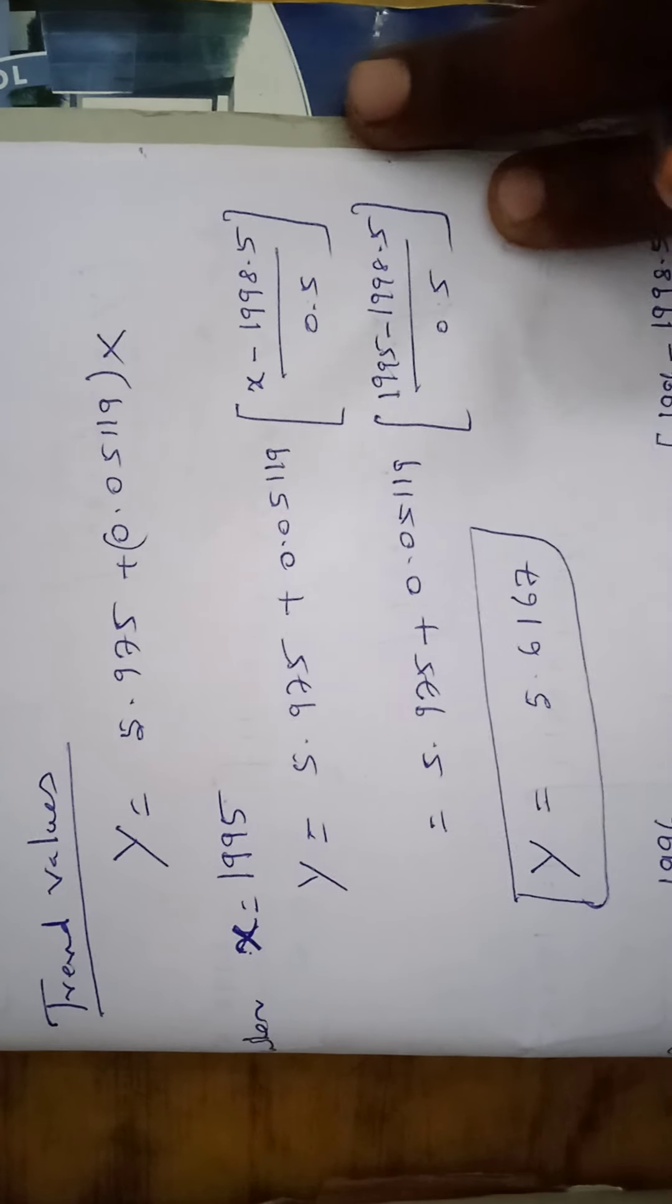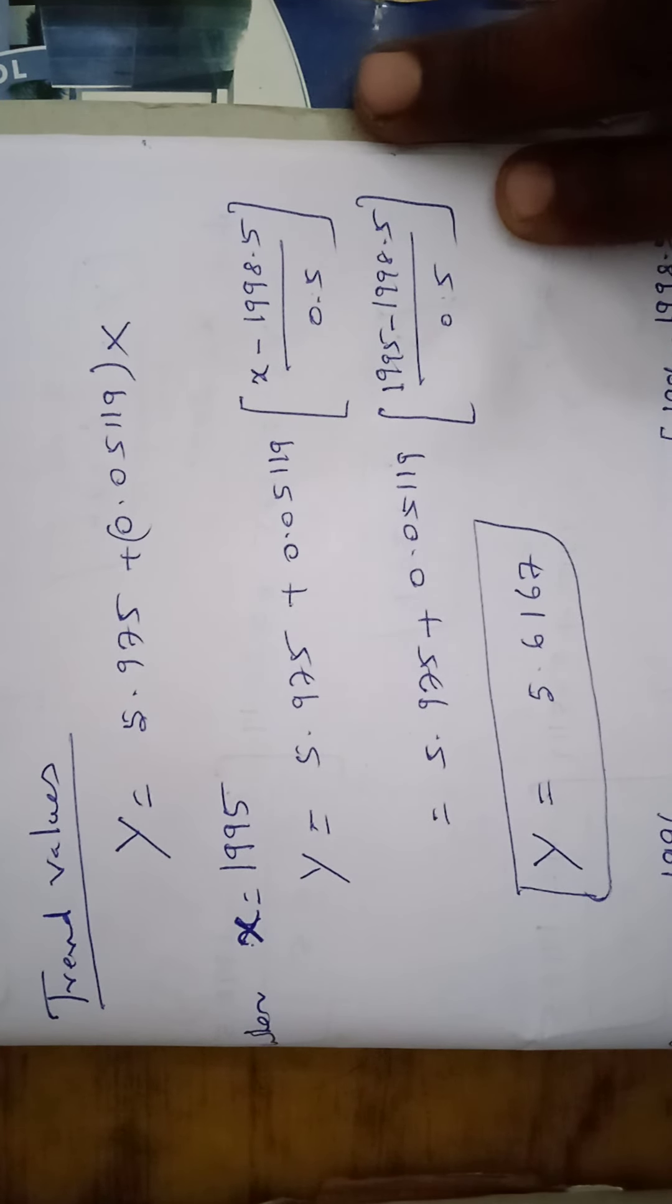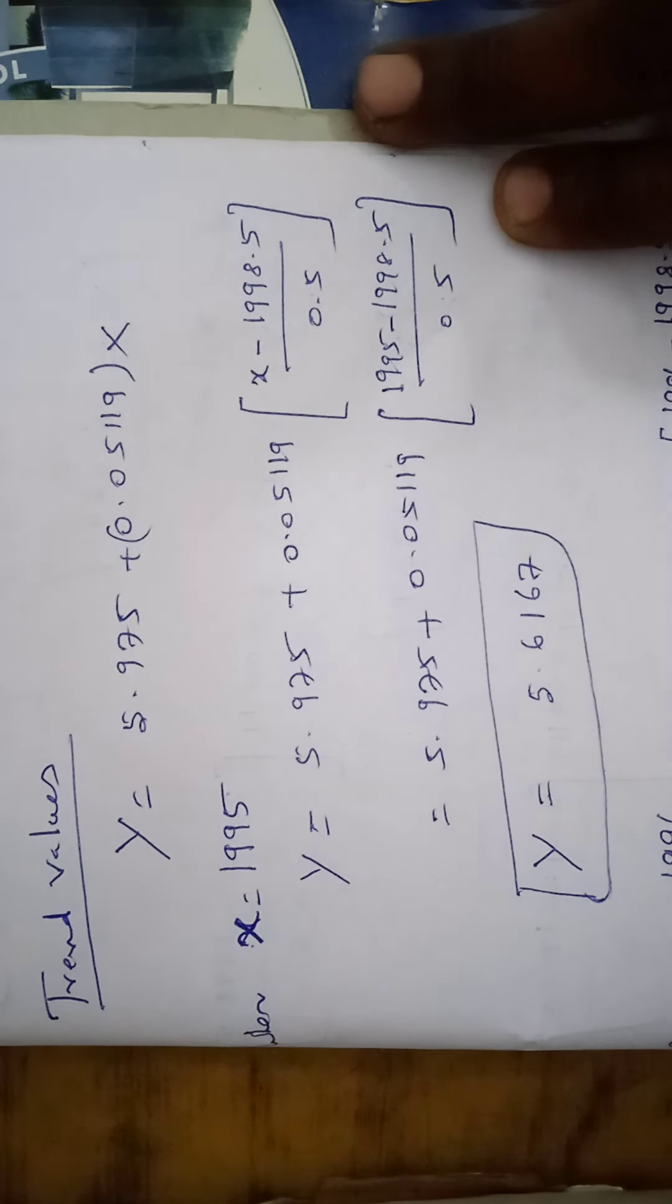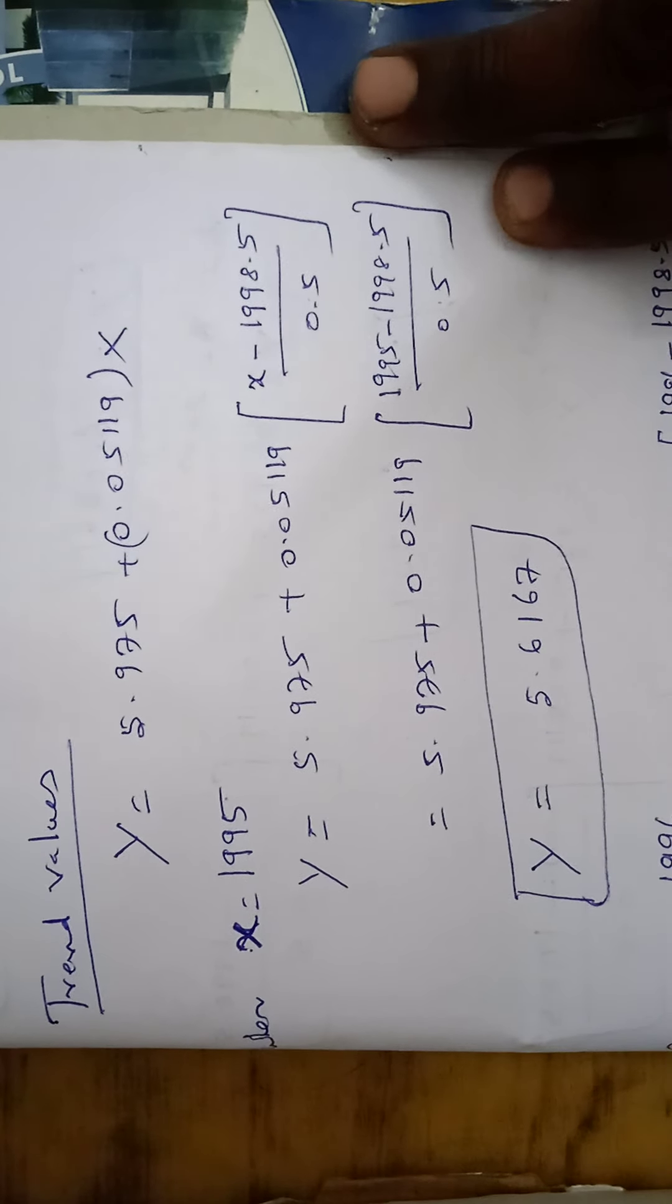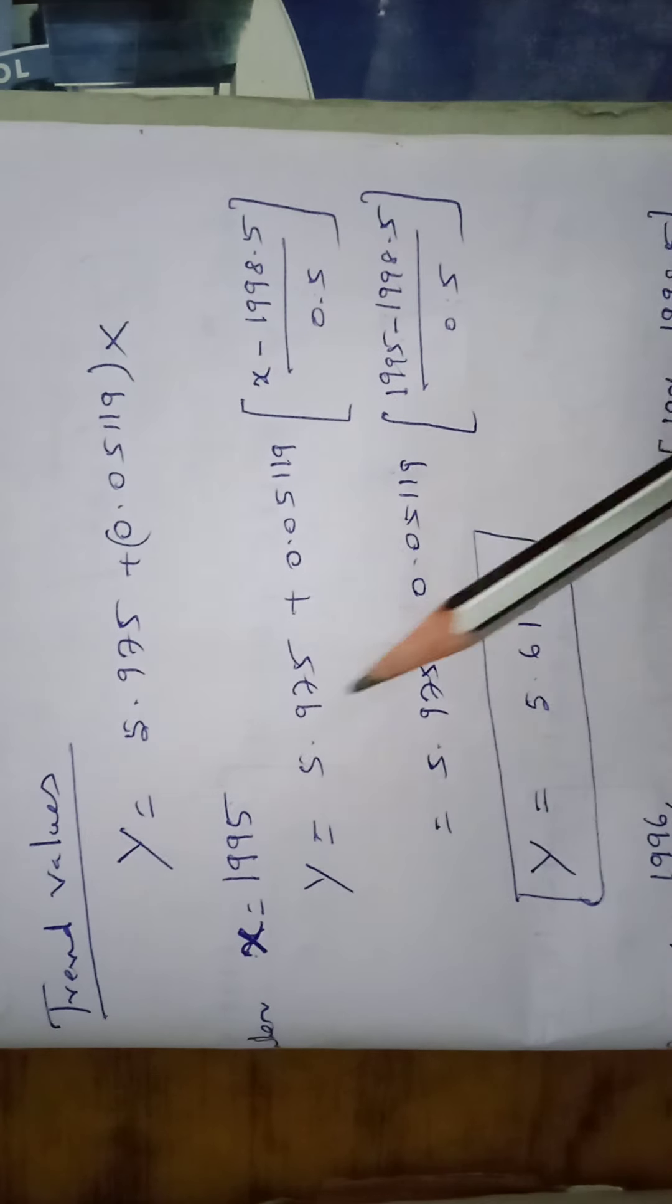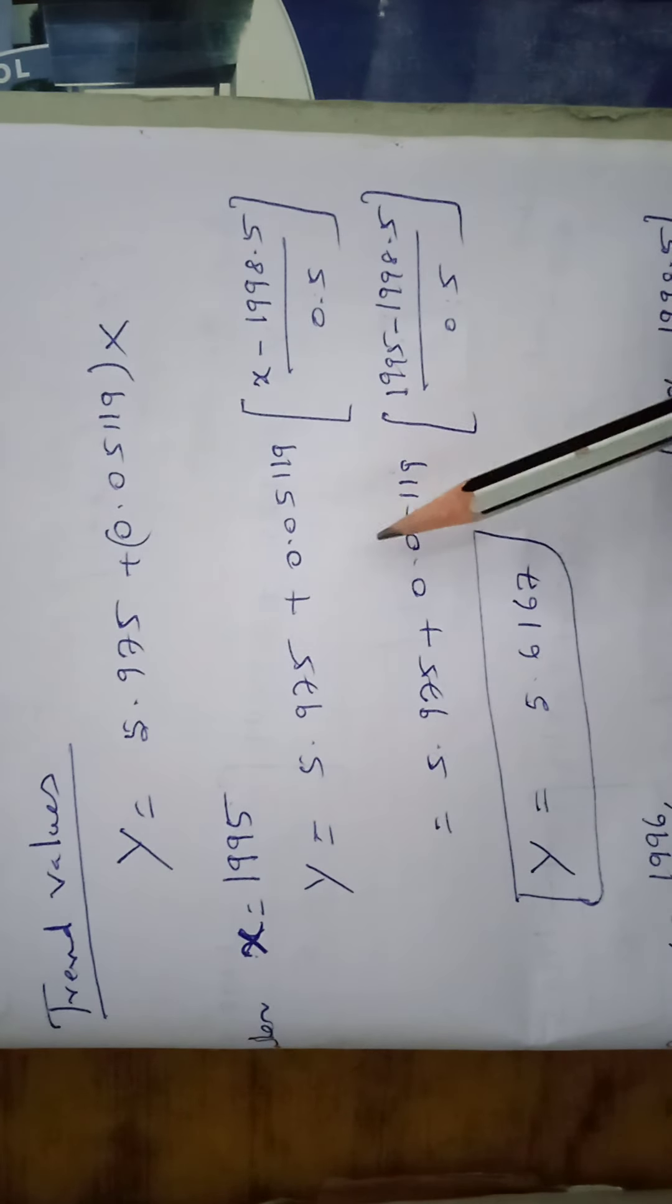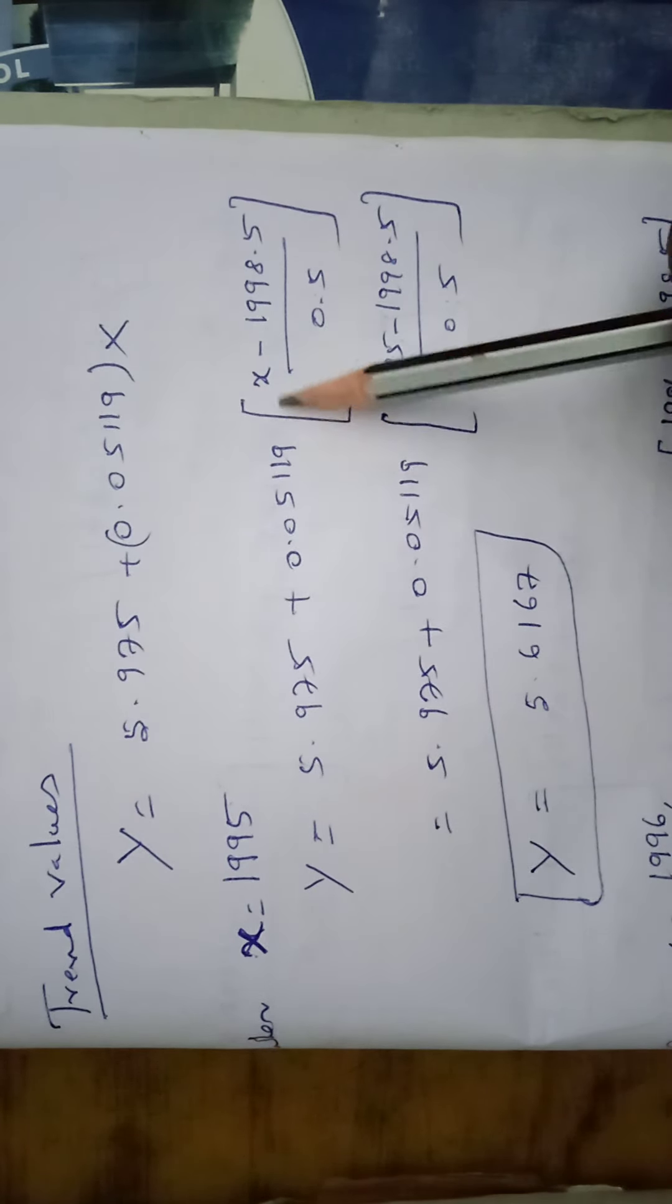In this straight line trend equation we have to apply each and every year. So first year 1995. So we have to put X equal to 1995. Y equal to 5.975 plus 0.05119 into X.